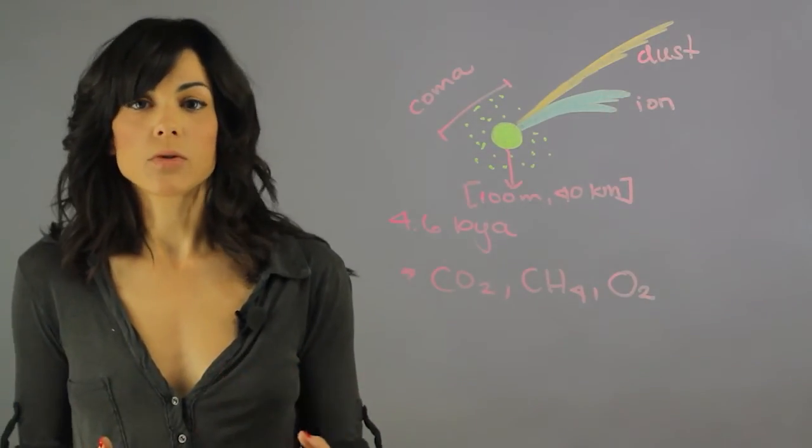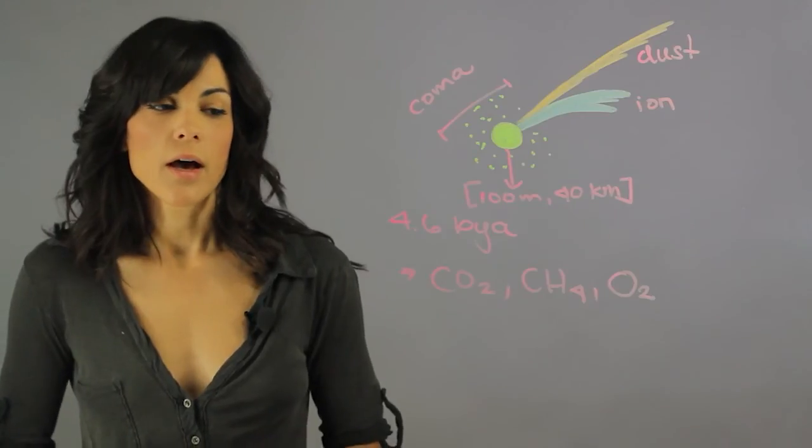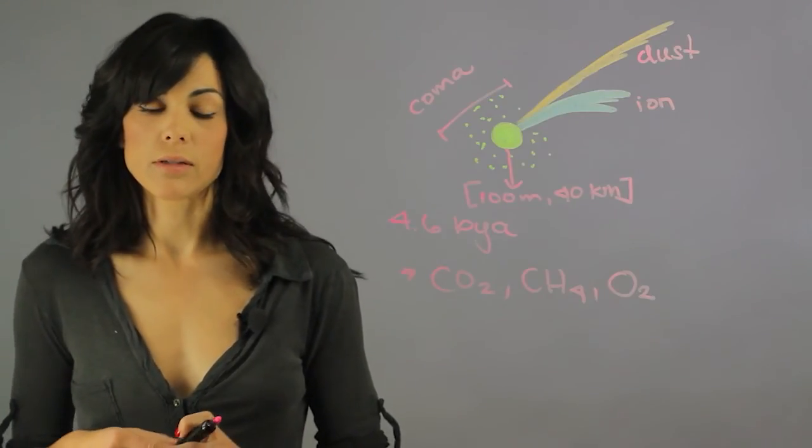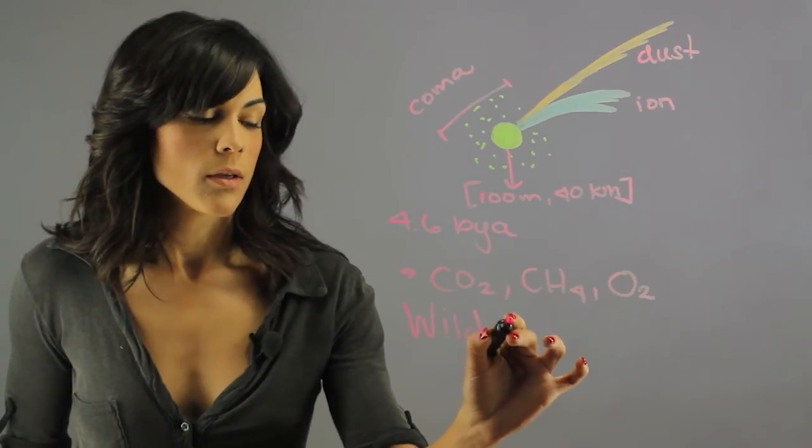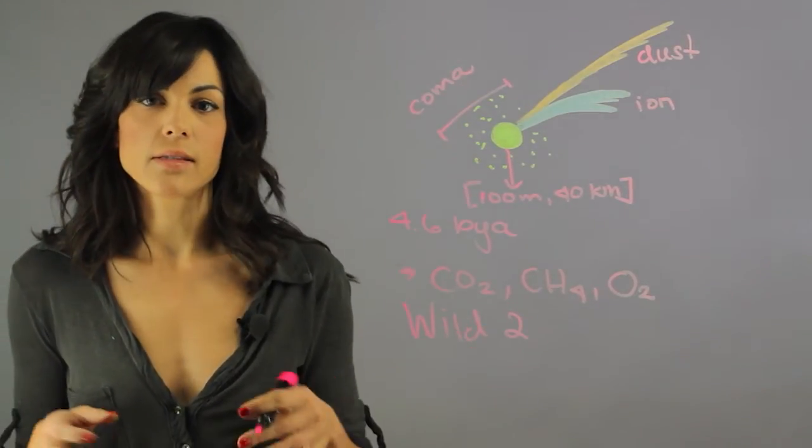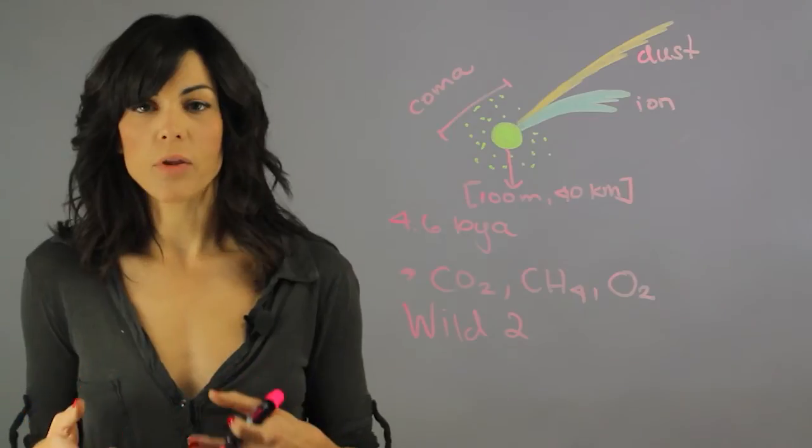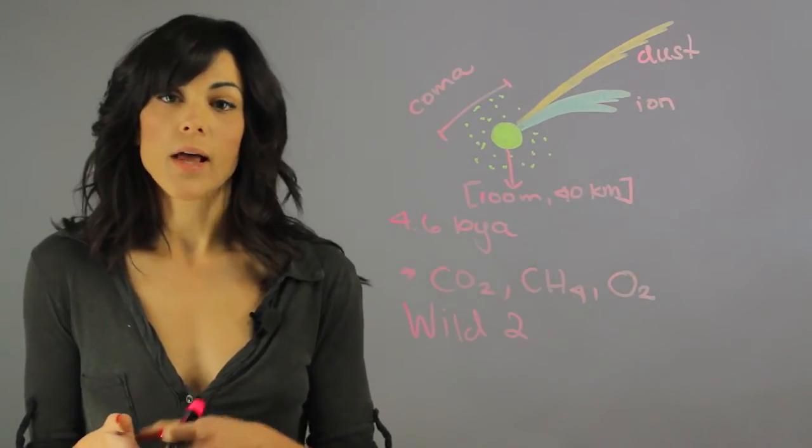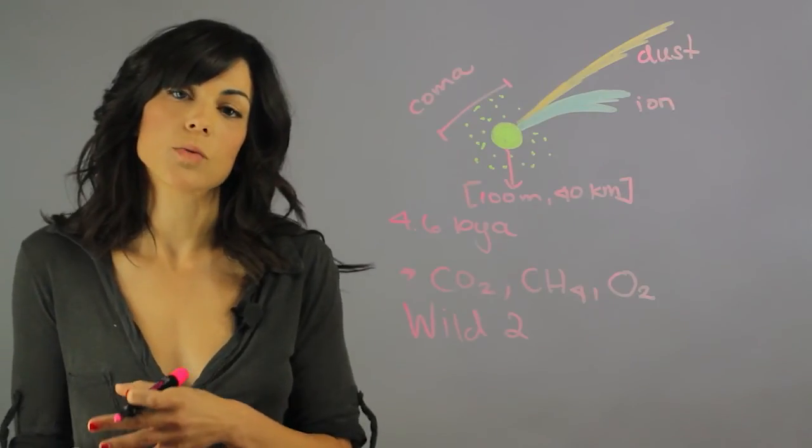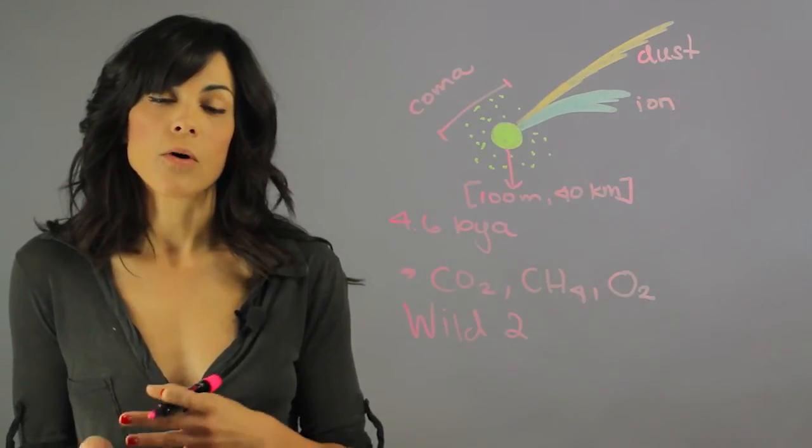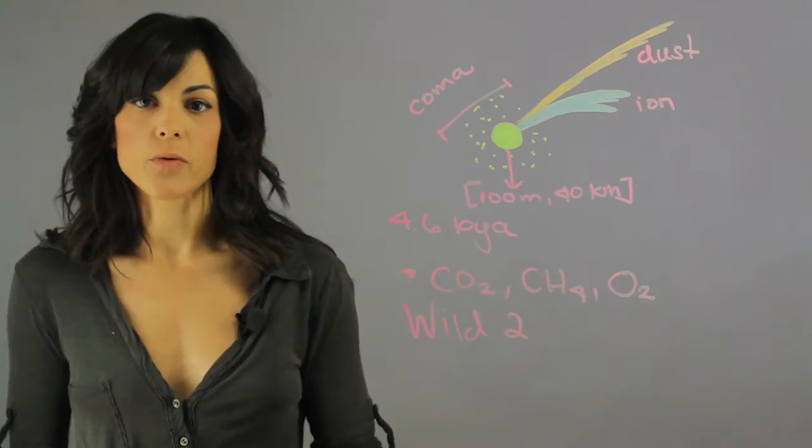A really important discovery was the Wild 2 comet, and the Wild 2 had these amino acids that have been thought to be responsible for the evolution of life here on Earth. So there's a possibility that we had some impacts with comets, and comets brought all those building blocks that are responsible for life.